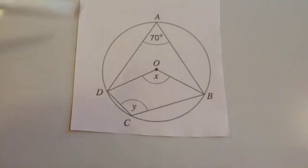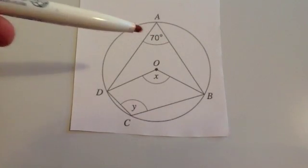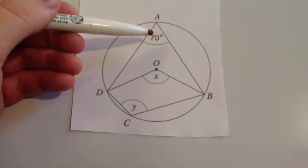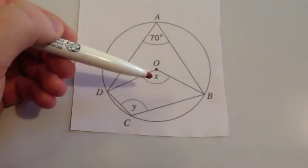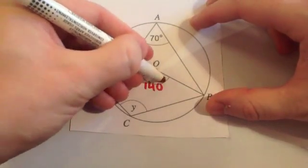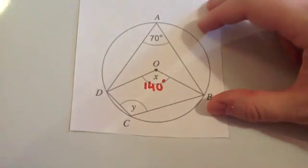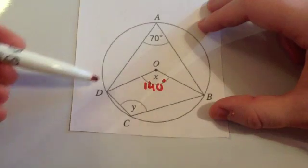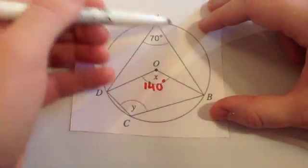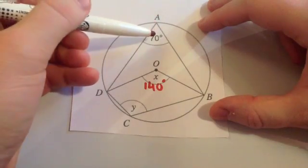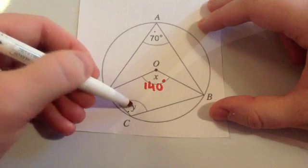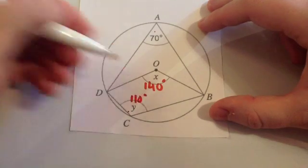This question is a mixture of the first circle theorem and the fourth circle theorem. The angle at the circumference will be half the angle at the centre, so this one's double this one — this angle here will be 140 degrees. The fourth circle theorem is the cyclic quadrilateral; you can see the four-sided shape. So this angle and this angle will add to 180, making this angle 110 degrees.